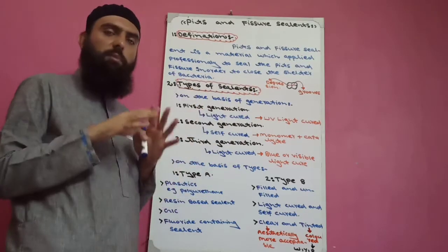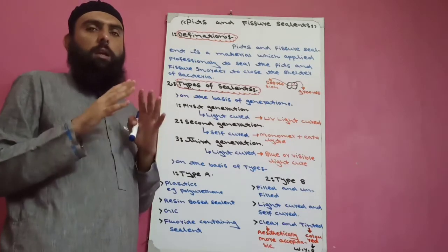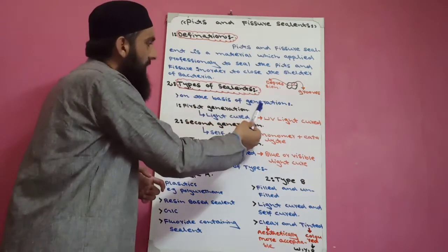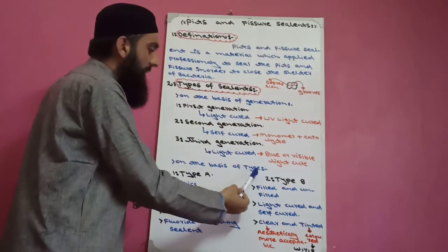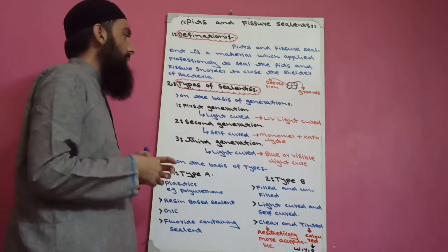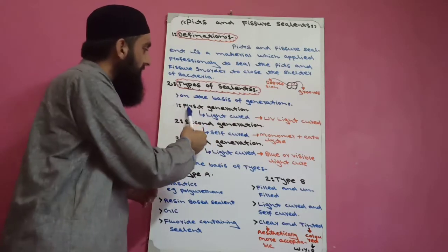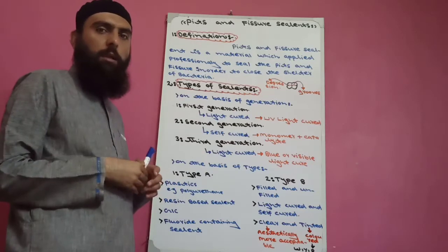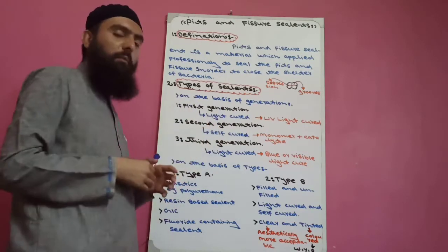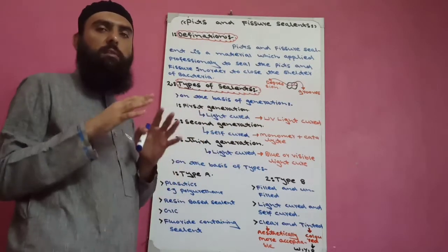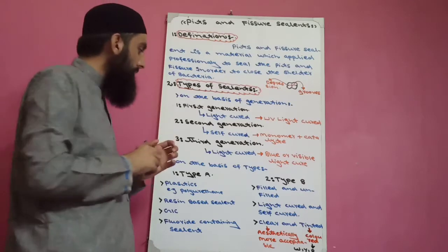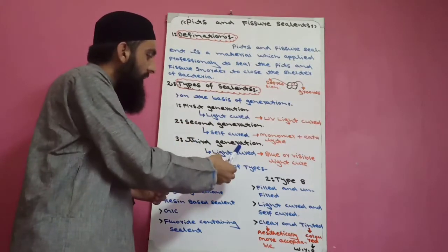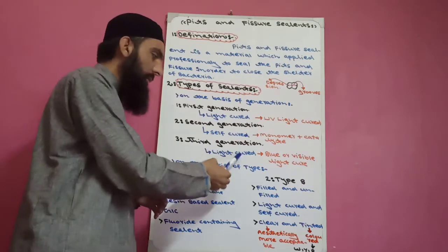Now let's discuss the types of pits and fissure sealants. Types are classified on two bases: number one, on the basis of generation; number two, on the basis of type. On the basis of generation there are first, second, and third generation sealants. First generation pits and fissure sealant is light-cured — these sealants are cured by light. Second generation is self-cure.